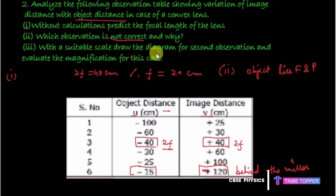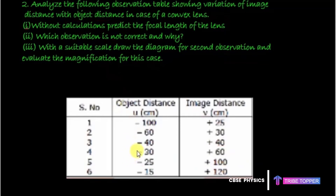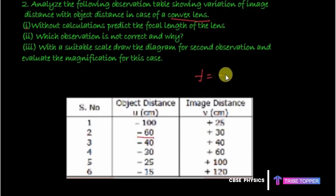The third part says: draw the ray diagram for the second observation using a suitable scale and evaluate the magnification. The second observation has object distance u = −60 cm and image distance v = +30 cm. We calculated the focal length to be 20 cm, so for this convex lens, an object placed at −60 cm lies beyond 2f from the lens.